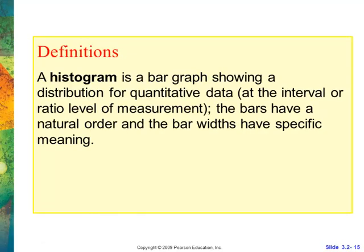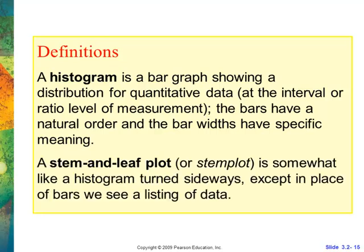Here's definitions. A histogram is a bar graph for quantitative data at the interval or ratio level. It has to be quantitative, though. Any quantitative data. The bars have natural order and the bar widths have meaning. The bar widths show the bins. A stem and leaf is kind of like a histogram. But except for bars, we see the listing of values. That's kind of useful if we want to see where all the numbers are. In the histogram, we don't see any of the numbers. Whereas a stem and leaf, we see all the values that go along with it.